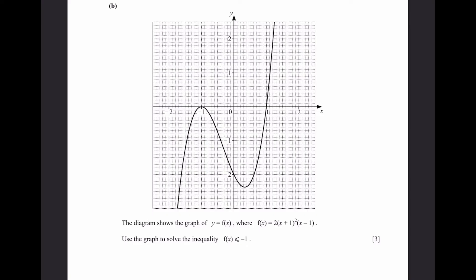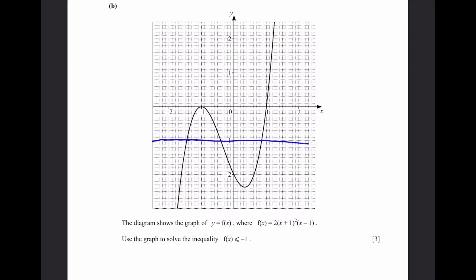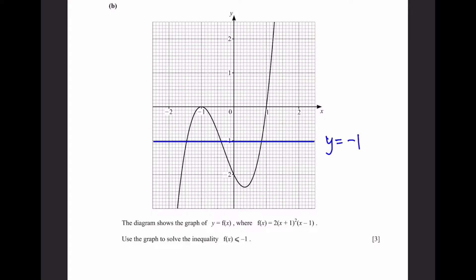Let's go to part B. The diagram shows the graph of y equals f(x), where f(x) equals 2 times (x+1) squared times (x-1). Use the graph to solve the inequality f(x) is less than or equal to minus 1. Since y equals f(x), we need y less than or equal to minus 1. Let's draw the line y equals minus 1 — a horizontal line through the point minus 1 on the y-axis — and find the x values such that y is less than or equal to negative 1.